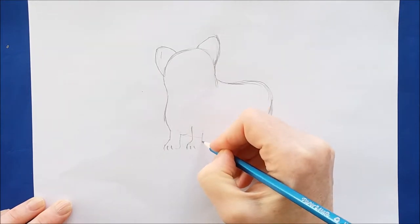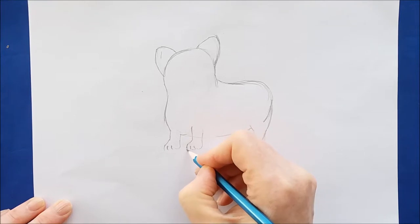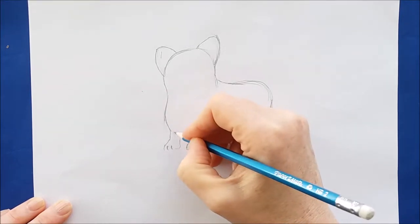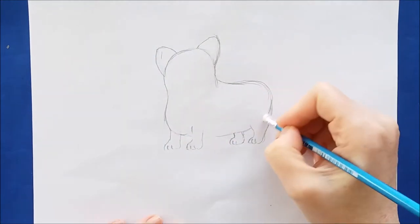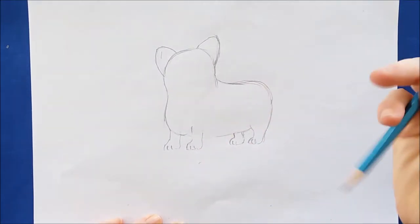And here we'll add the other front paw. Same thing, downward line and then three little curved lines for the toe. Now we have the shape of the corgi all finished. So the next thing we'll need to do are add some details and a tail.